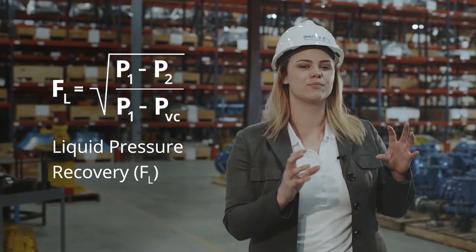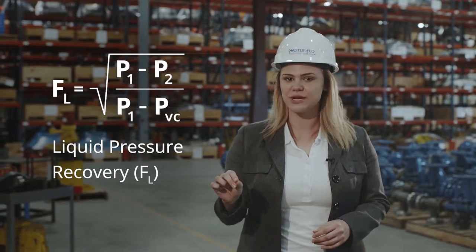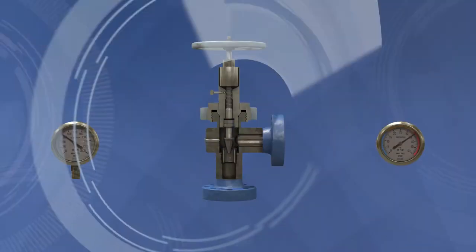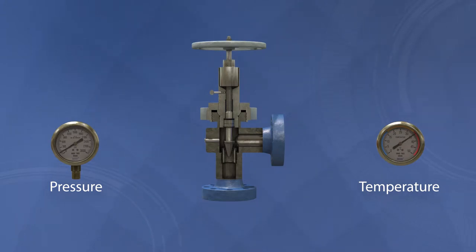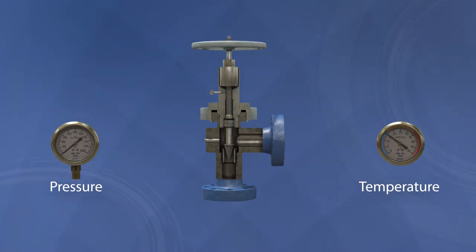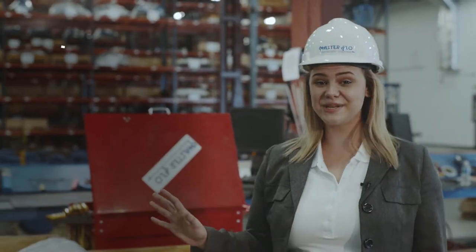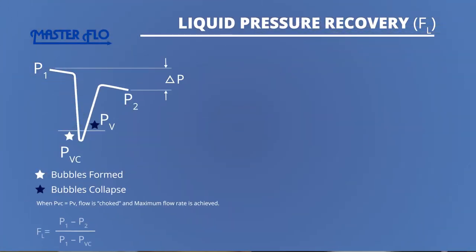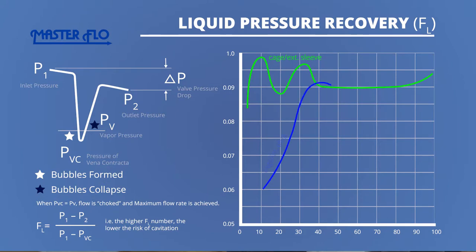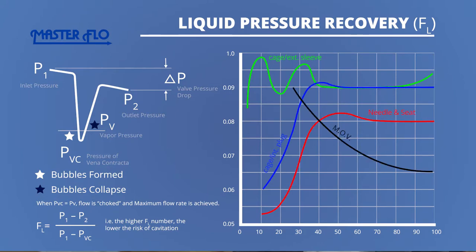Liquid pressure recovery is the ratio between the pressure drop and the difference between the upstream and the vena contracta pressures. If the pressure in the choke falls below the vapor pressure of the liquid, cavitation may occur, greatly reducing the pressure in the valve. The susceptibility to cavitation is governed by the valve FL number, which determines how low the pressure can get inside the valve. In extreme cases, freezing of gas may occur due to hydrate formation. As you can see, the cage with external sleeve design provides a higher FL over a wider range of valve openings. The higher FL number means a lower chance of cavitation and consequently, a lower risk of damage.